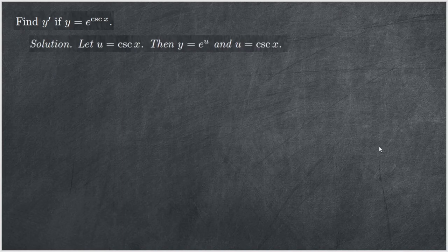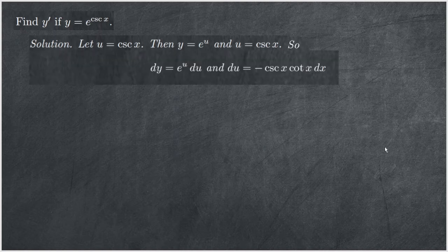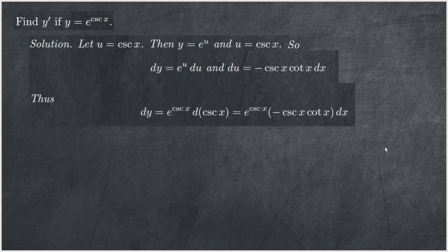Question two: choose u so that the given function is the composite of two functions, so that y as a function of u is simple to differentiate and u as a function of x is also simple to differentiate. We then calculate the differential of y with respect to u and the differential of u with respect to x. Now we can write dy as a function of x times dx — this is the composite of two differentials. Since the composite of differentials is the differential of the composite, the function before dx must be the derivative of the given function.